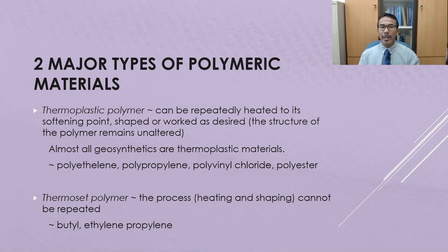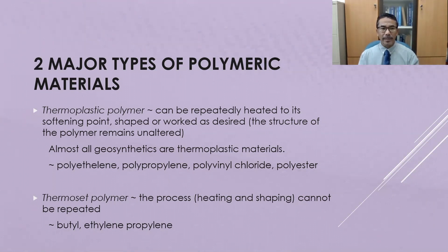There are two major types of polymeric materials in relation to temperature. One is what we call thermoplastic polymer and another is thermoset polymer. Thermoplastic polymer can be reheated until its softening point and reshaped without changing the structure of the polymer, whereas the thermoset polymer cannot be reheated.